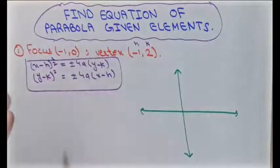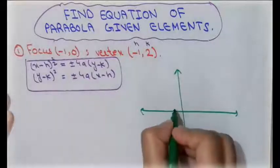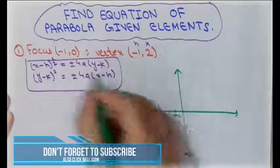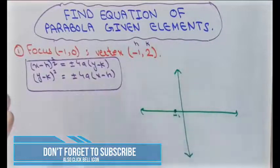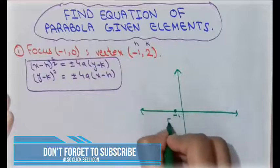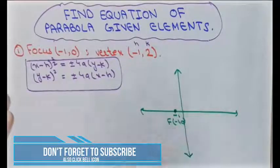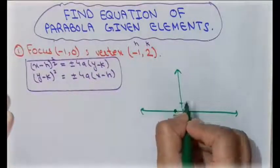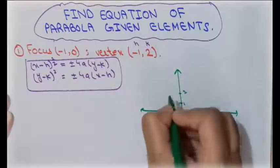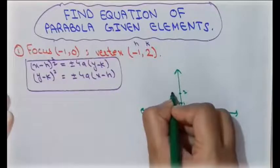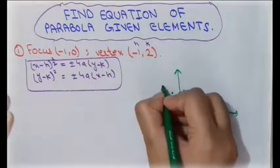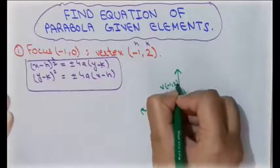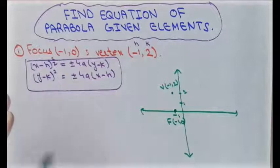Analyzing the given information: the focus point has x-coordinate minus 1 and y-coordinate 0, so the focus is at (-1, 0). The vertex point is at positive 2 on the y-axis, so the vertex is at (-1, 2).